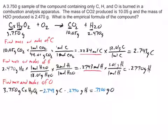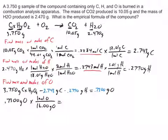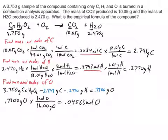Now our next step is to find the moles of oxygen. We're going to start with 0.7300 grams of O and convert it to moles by dividing by its molar mass. When we do that, we get 0.04563 moles of O. I'm going to underline that in red.